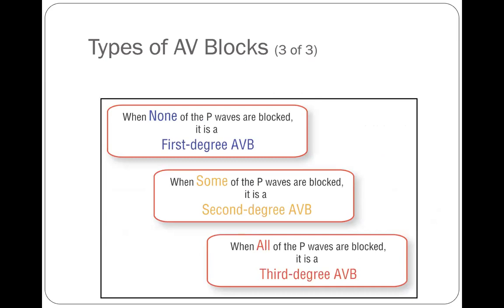When we say a P-wave is blocked, we mean there is a P-wave but no corresponding QRS complex. If none of the P-waves are blocked, we have a first degree heart block. If some of the P-waves are blocked, we have a second degree heart block. If all of the P-waves are blocked, we have a third degree heart block.